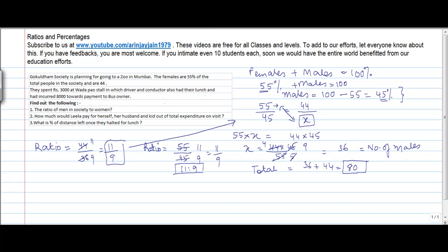The first question on the ratio of men to women is done. The second question: how much would Leela pay for herself, her husband, and her kid out of the total expenditure on the visit? First we need to know the total expenditure. The total payment is what was paid at the vada pav stall plus the bus: 3,000 plus 8,000, so the total expenditure on the trip is 11,000 rupees.